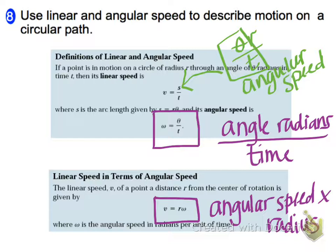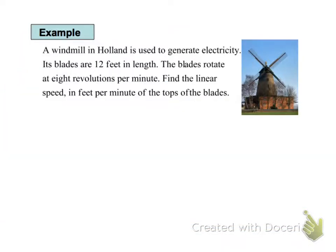So again, the angular speed is going to be the angle in radians over time. The linear speed is going to be that angular speed times the length of the radius. Let's go ahead and take a look at an example now.